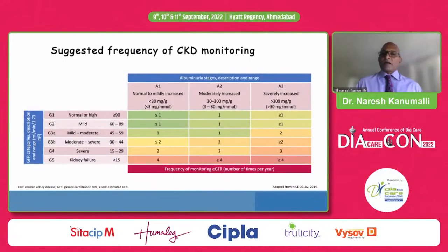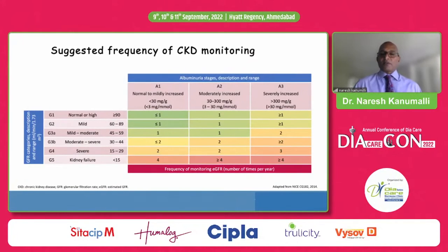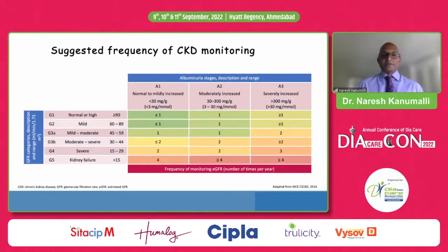People often ask how often they should be checking. There is a useful heat map from NICE available online that tells you, based on different criteria, when and how often to measure eGFR and urine ACR.